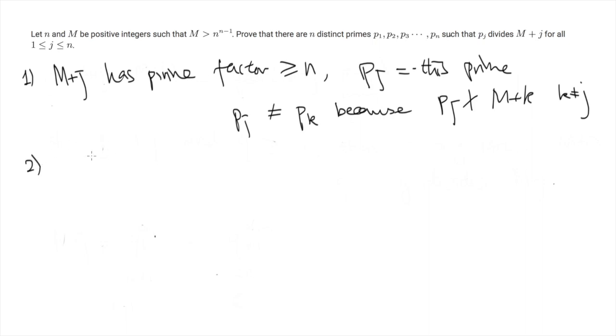Now let's consider the second case that M plus J only has prime factors smaller than n. And so we choose the prime factor Pj such that Pj to the power alpha j is larger than n.